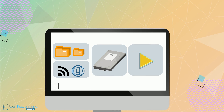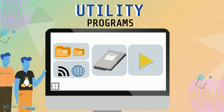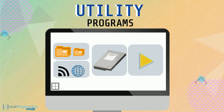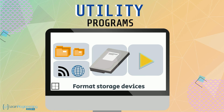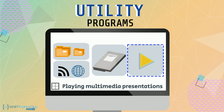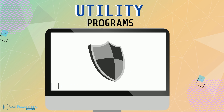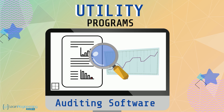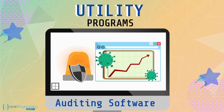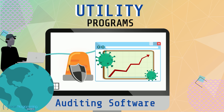Software that supports and enhances the role of the operating system is known as utility programs. These programs are provided by the operating system's creator and are used for installation of the operating system and other features. Examples include programs that format storage devices, copy files to a storage device, compress and decompress data, play multimedia presentations, and handle network communications. Security-focused utility programs include auditing software that records and analyzes activities on the computer, and is also designed to detect the presence of sniffing software — malicious software added by an intruder that records activities and reports them back.